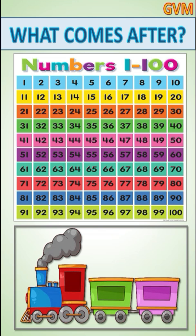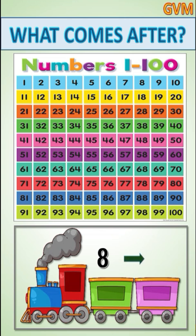Children, what can you see on your screen? You have a 1 to 100 counting chart. We will solve some examples. The first example is number 8. We will find out what is the next number after 8. Number 8 is here on the chart, and the number after 8 is number 9. So 9 is the right answer — here is written number 9.